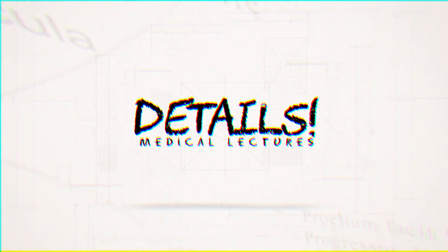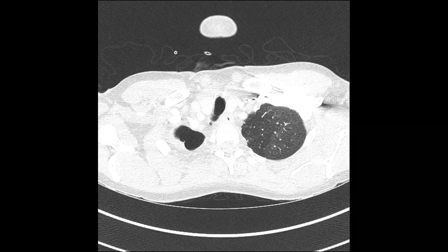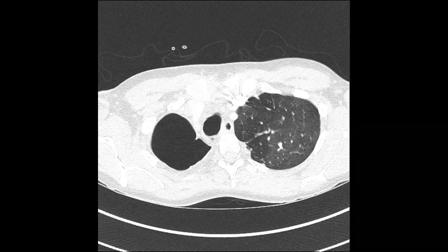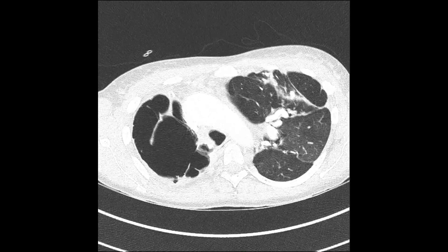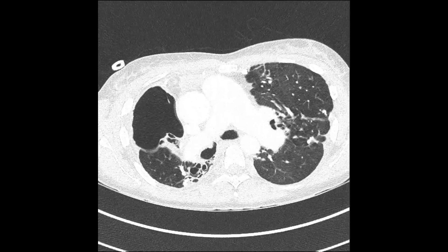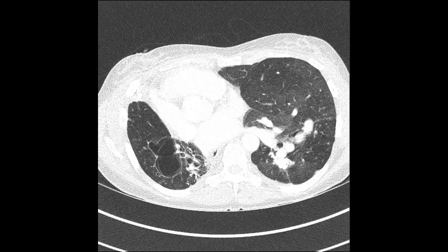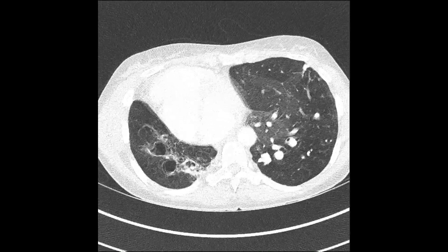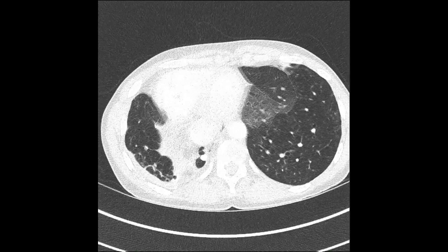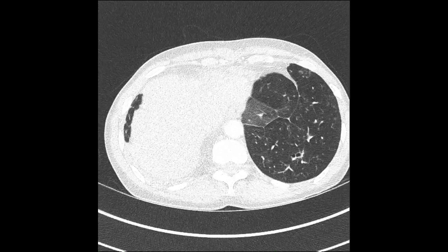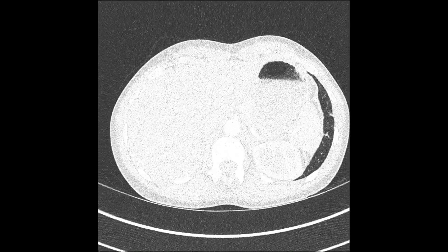This is a CT scan of a patient with advanced bronchiectasis, with a particularly notable finding of a huge bulla on the CT, which you can see on the left side of your screen. The other parts of the scan include saccular bronchiectasis of the right middle lobe and superior segment of the right lower lobe, with collapse of these lung segments.